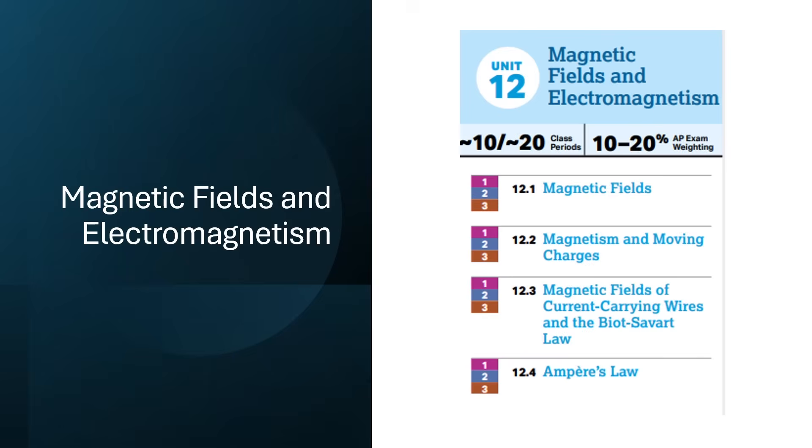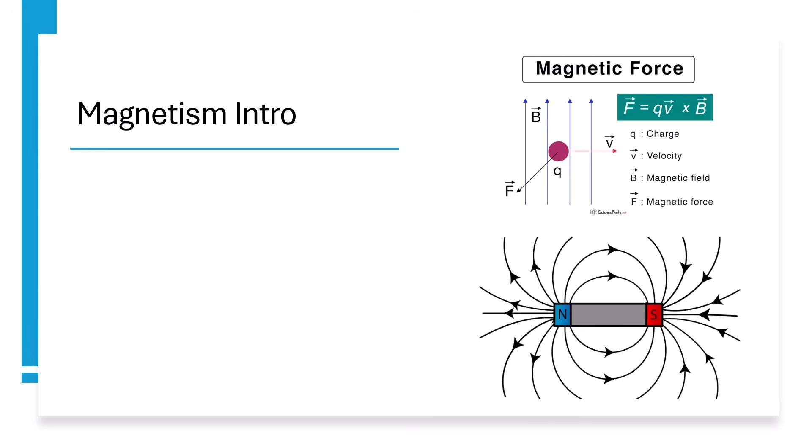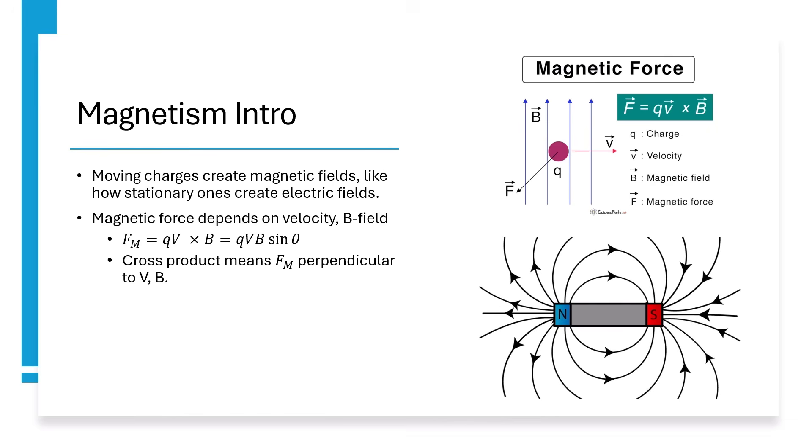With electricity, we learn that static electric charges create electric fields found by using Coulomb's law. Now with magnetism, moving charges create magnetic fields with a different equation for force. Magnetic force is the cross product of charge times velocity and magnetic or B-field. Taking a vector cross product isn't testable in the AP, but you can use the equation QVB sinθ to find the magnitude of magnetic force.